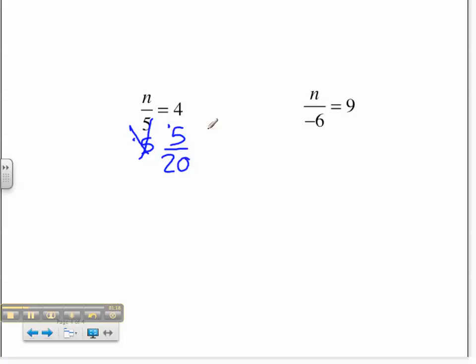But then you have to double check that. So 20 divided by 5 is 4, and so your answer is n equals 20.